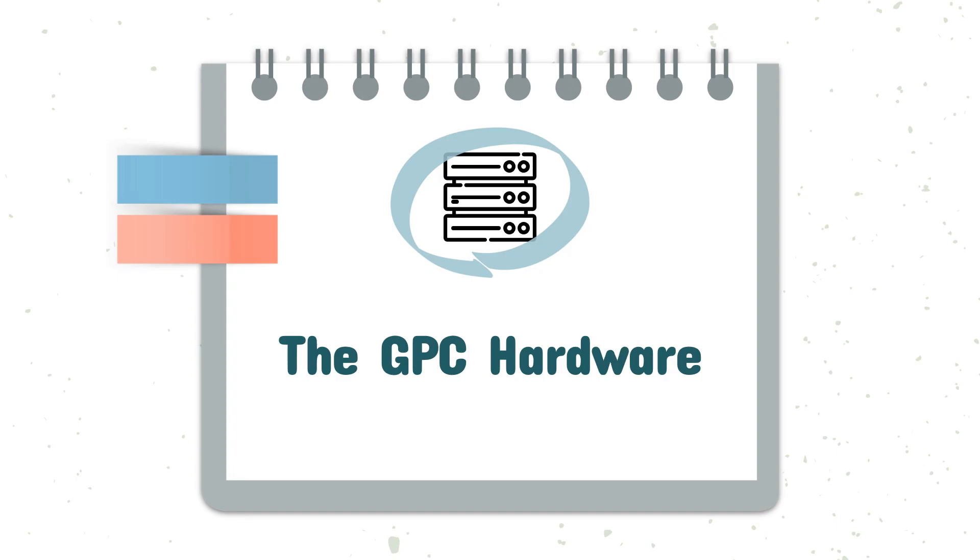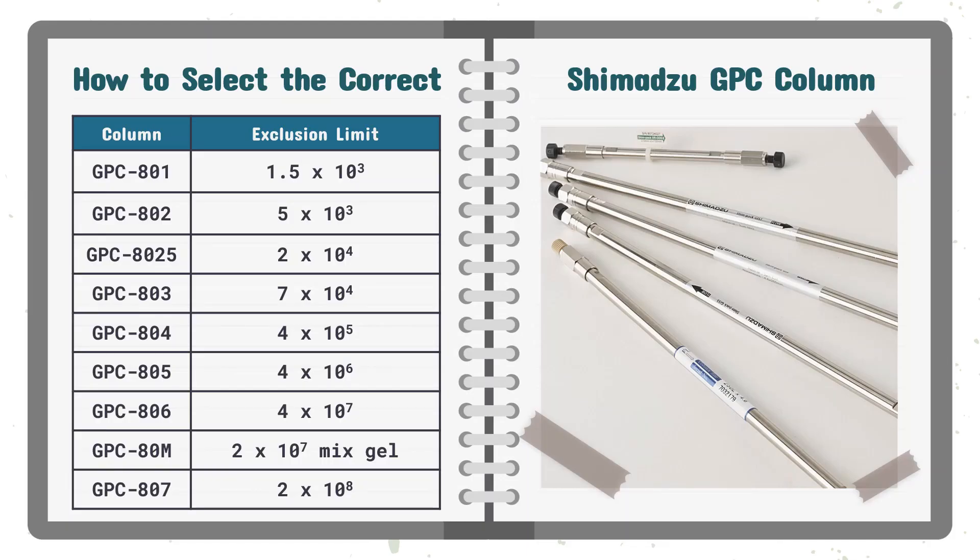There are two essential hardware components of GPC that will be introduced in this video. The first is the column. GPC columns are typically packed with porous particles made up of polystyrene polymers of various diameters and pore sizes. These are determined by the different degrees of polymer cross-linking. The variety of columns available have exclusion limits ranging from 1,500 to 200 million, providing more options to select a column optimized for separation at the target's molecular weight.